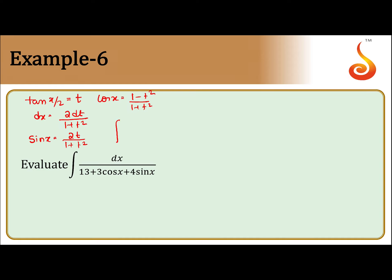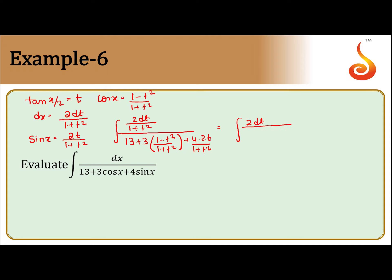Substituting these values into the integral, we get 2dt/(1 + t²) divided by 13 + 3·(1 - t²)/(1 + t²) + 4·(2t)/(1 + t²). Simplifying, we get 2dt divided by 13 + 3 - 3t² + 8t.